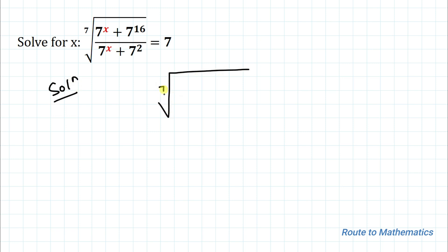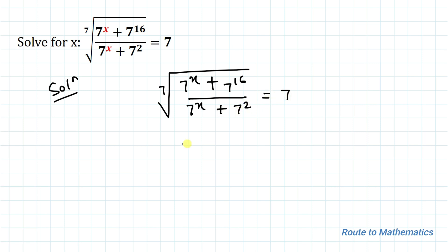So we have: 7th root of (7 to the power x plus 7 to the power 16) divided by (7 to the power x plus 7 squared) equals 7. Now in the next step I will try to remove this 7th root.